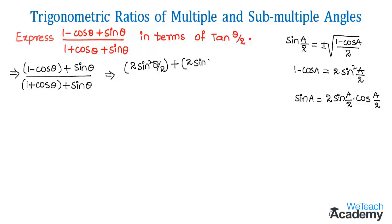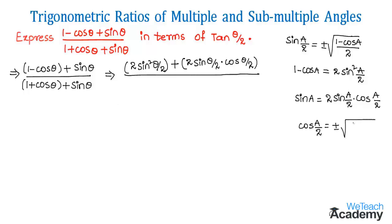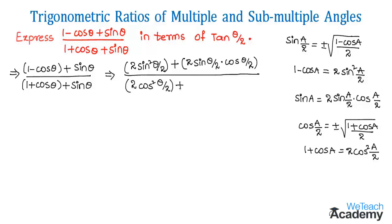The numerator becomes 2 sin²(theta/2) plus 2 sin(theta/2) cos(theta/2). In the denominator, 1 plus cos theta can be written using the formula cos(a/2) = ±√((1 plus cos a)/2), so 1 plus cos a equals 2 cos²(a/2). Therefore 1 plus cos theta becomes 2 cos²(theta/2), and sin theta is again written as 2 sin(theta/2) cos(theta/2).